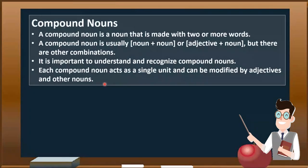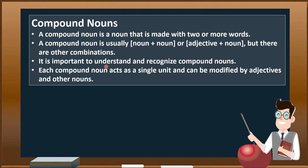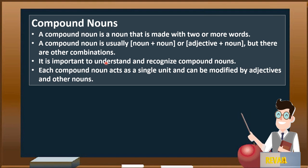What we see now on screen is about compound nouns. A compound noun is a noun made with two or more words — not one word but more than one. The combination of noun plus noun, adjective with noun, or other parts of speech with a noun creates a compound noun. It is important to recognize how to form compound nouns, understand their position in sentences, and know that each compound noun acts as a single unit — as a subject, object, or complement.